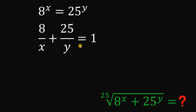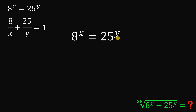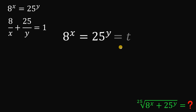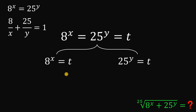Alright. So to answer this kind of question, if we have this kind of given — 8 raised to the power of x equals 25 raised to the power of y — one technique is to equate this to another variable and let's call this t. So doing this, we have two different cases. The first case is 8 raised to the power of x equals t, and the second case is 25 raised to the power of y equals t.